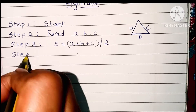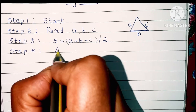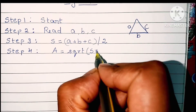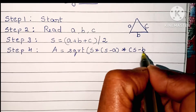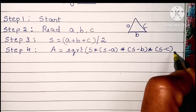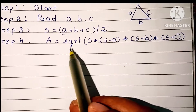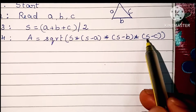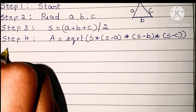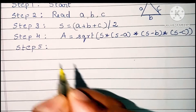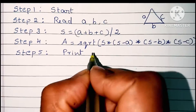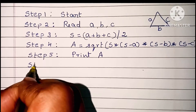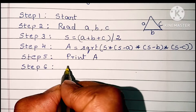In step four we have to calculate the area of the triangle using the formula: A is equal to the square root of s into (s minus a) into (s minus b) into (s minus c). This is the formula to find the area of a triangle. In step five we have to print the output value using a print statement — print A, where A represents the area of the triangle. In step six we have to stop the algorithm using the stop statement.